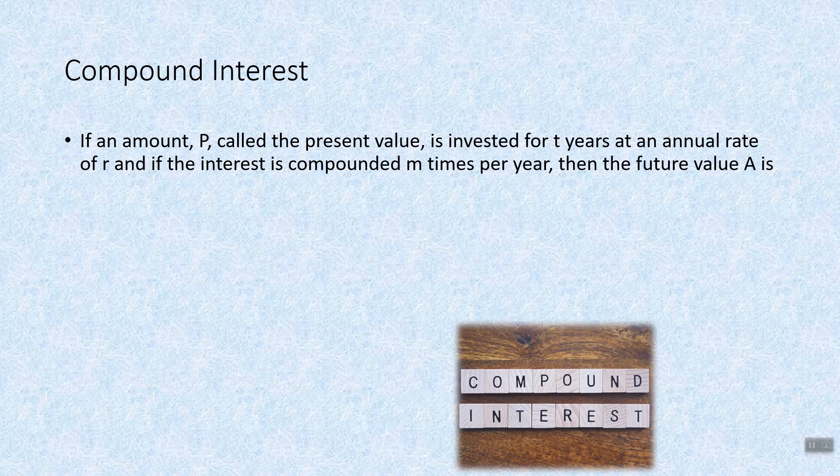And in general, we have compound interest where if we take an amount P called the present value and we invest it for t years at an annual interest rate of r, and if the interest is compounded m times per year, then the future value A is given by this formula. A of t, because it depends on time, is equal to P times 1 plus r over m to the mt.